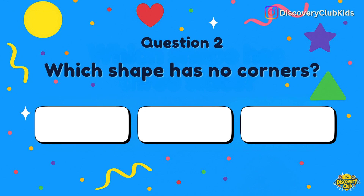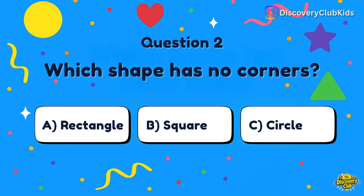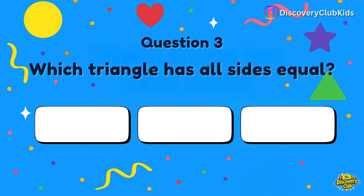Second question: Which shape has no corners? The options are rectangle, square, or circle. The answer is circle.